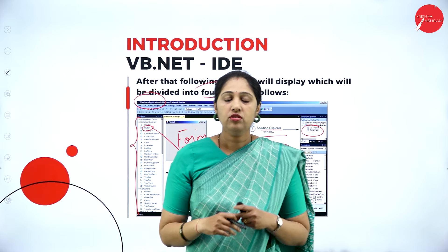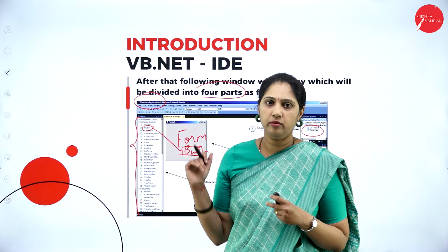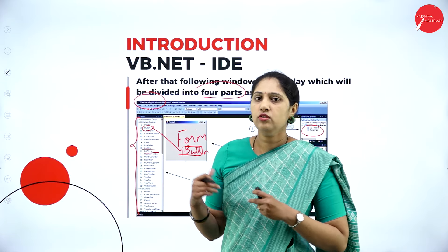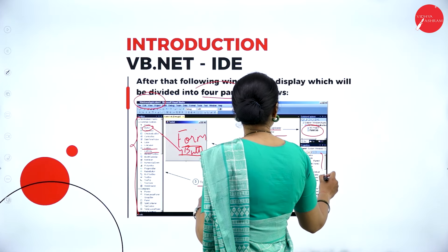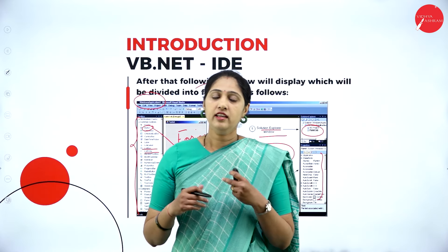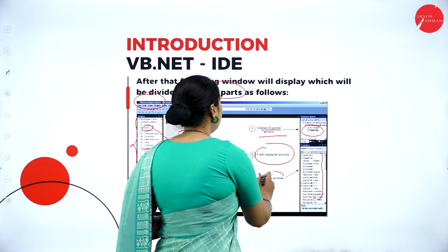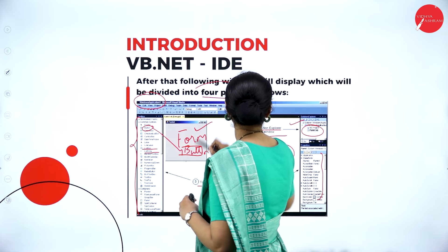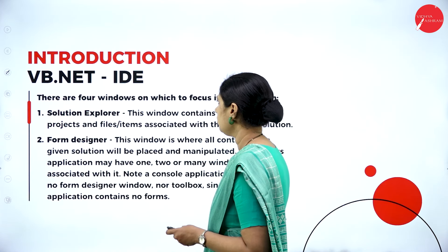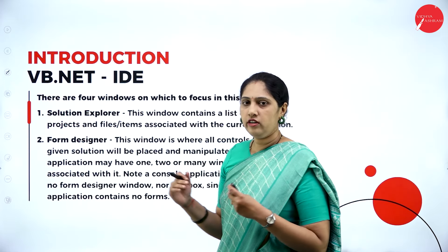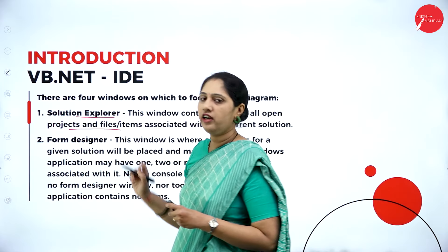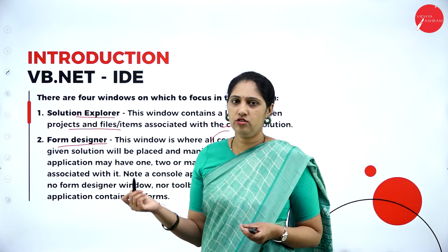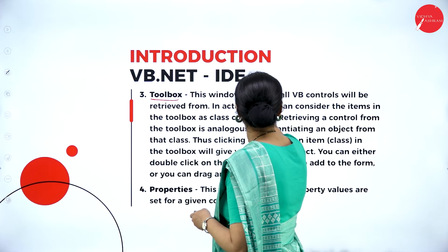When I open a Windows application, this is my IDE — it is divided into four parts. I can see a form, and the toolbox contains controls starting from text box, button, and so on. You just click and drag to get a button. The solution explorer tells you what files are inside the project. The form designer window shows my form where I can add controls and write code on form load.